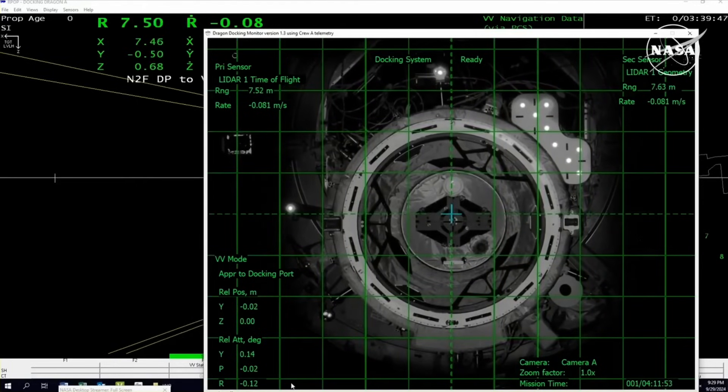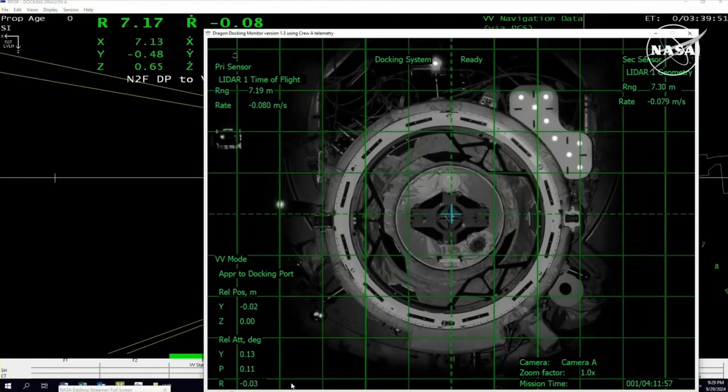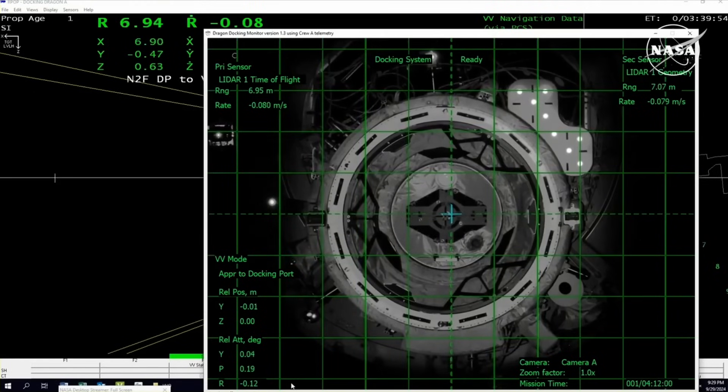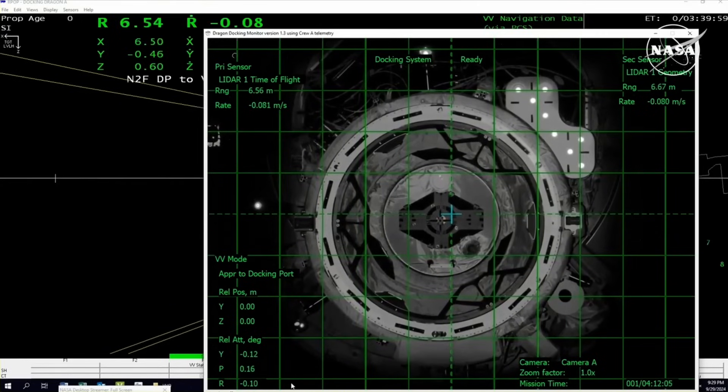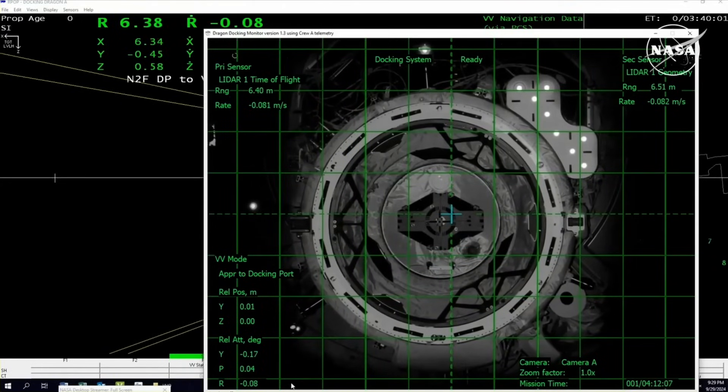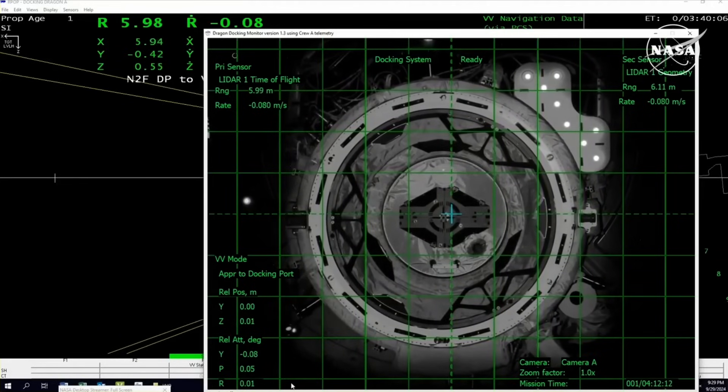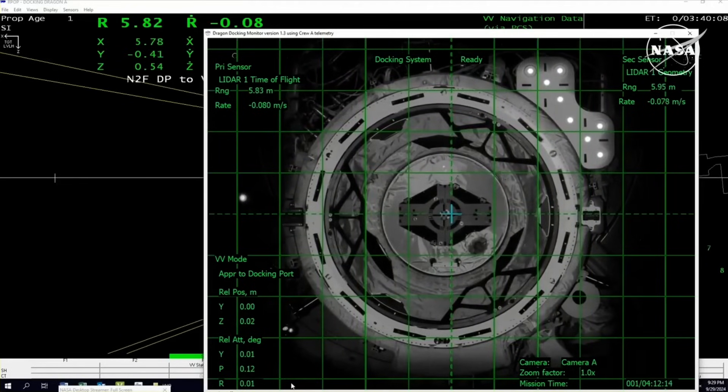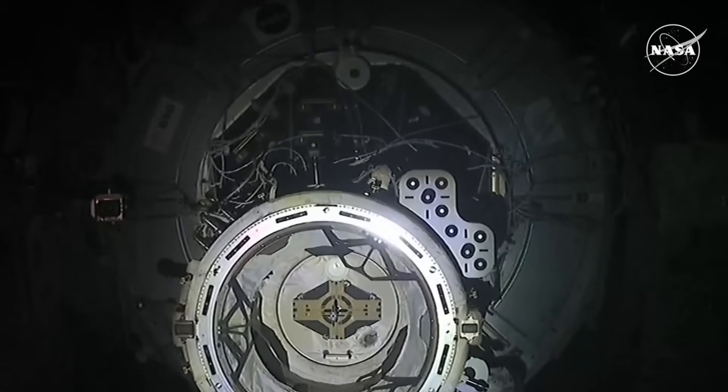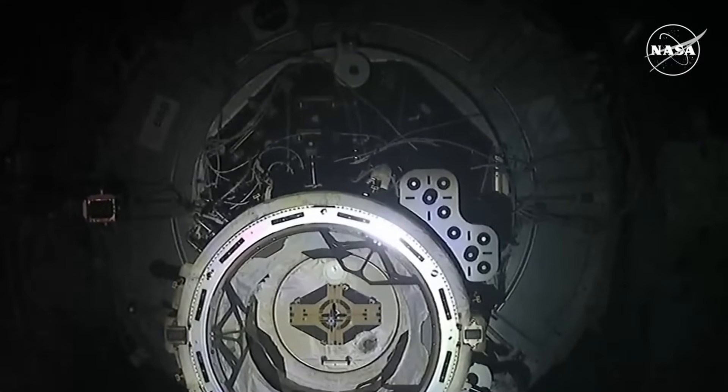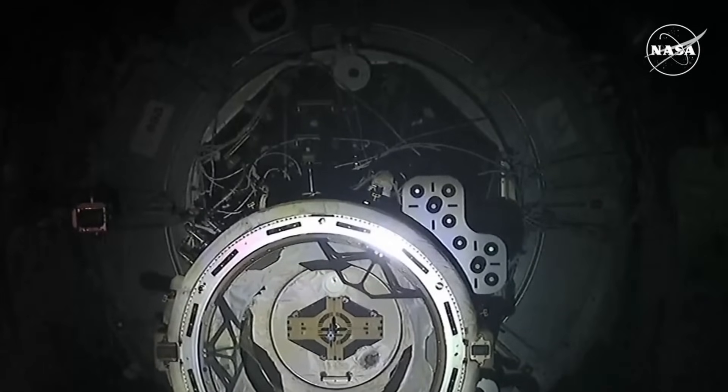Looks like just about seven and a half meters to go. First, we will be holding for soft capture when that soft capture ring makes contact with the space station that will then retract and begin hard capture. But docking for us is called at the time of soft capture. Five meters. Copy five.